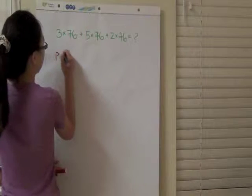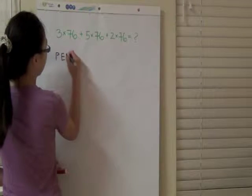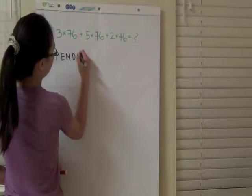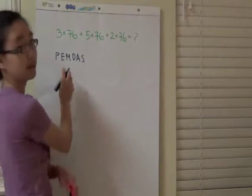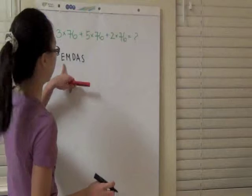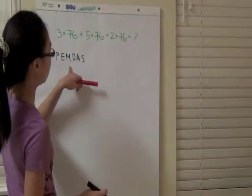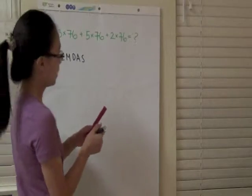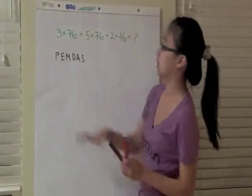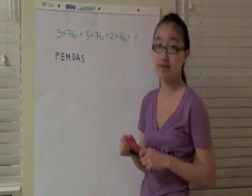P for parenthesis, E for exponents, some people ignore that for now, M for multiplication, D for division, addition and then subtraction. So that's the order that you go in when you have a long string of numbers and you want to find out what they equal.